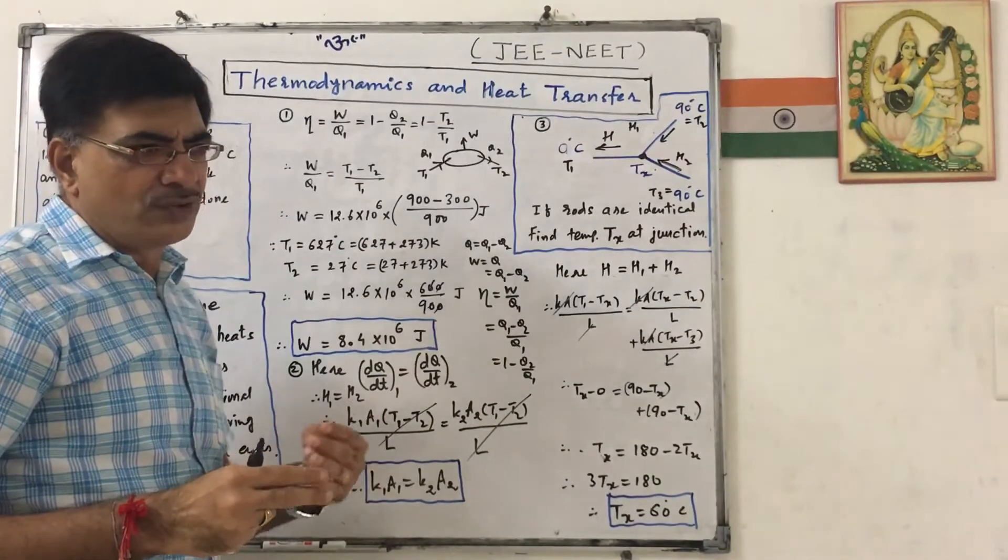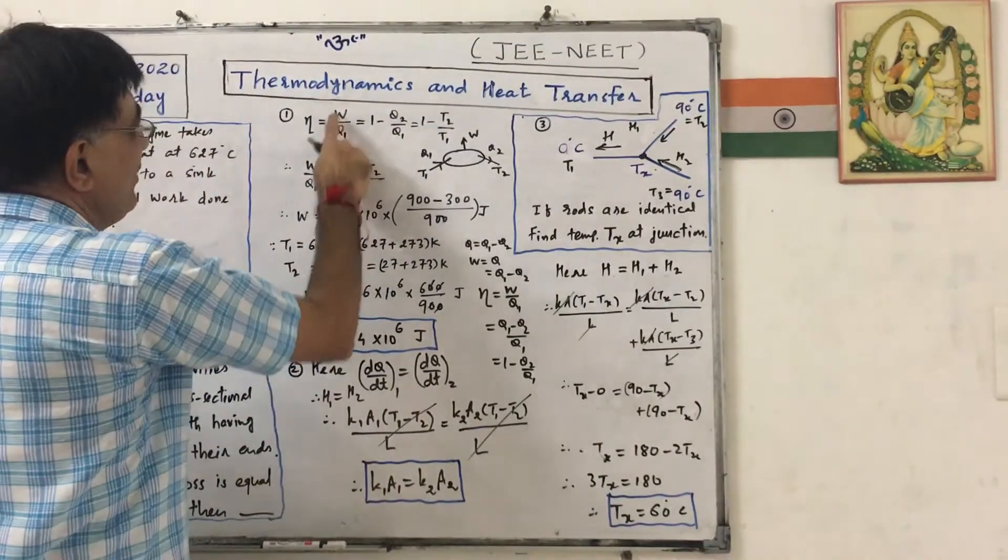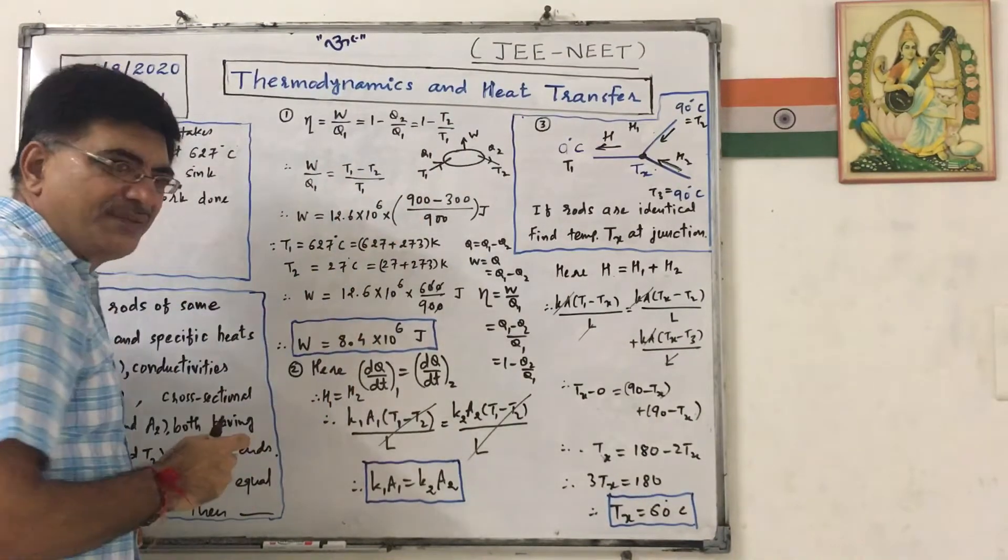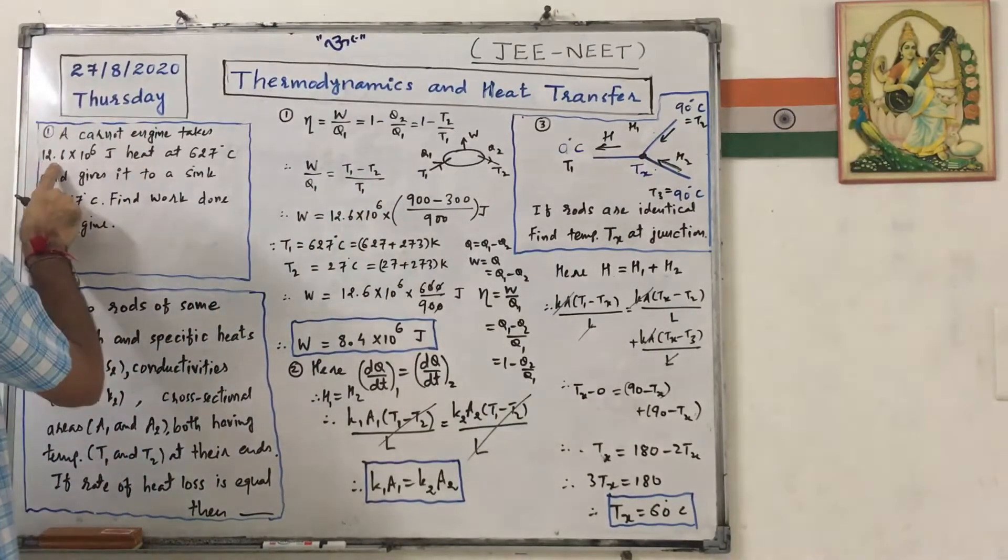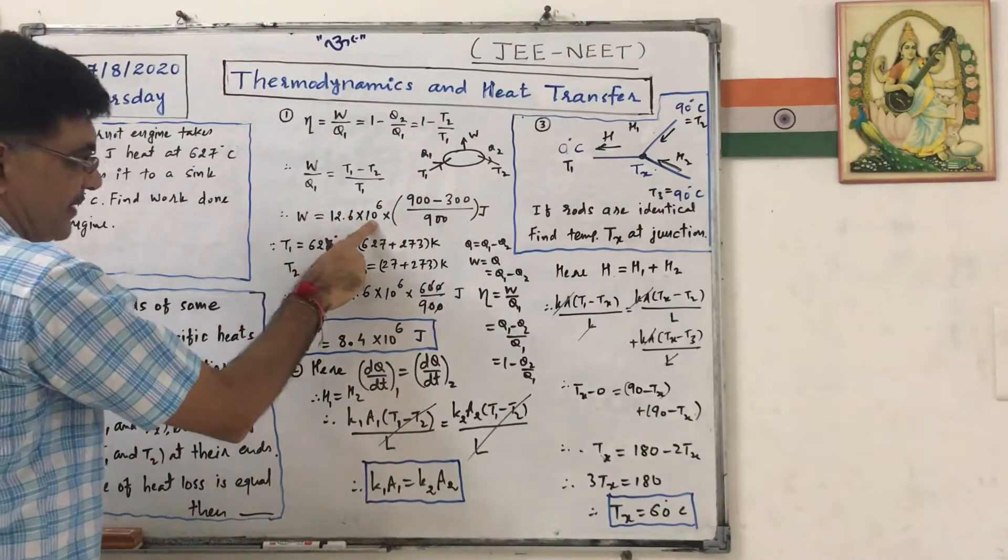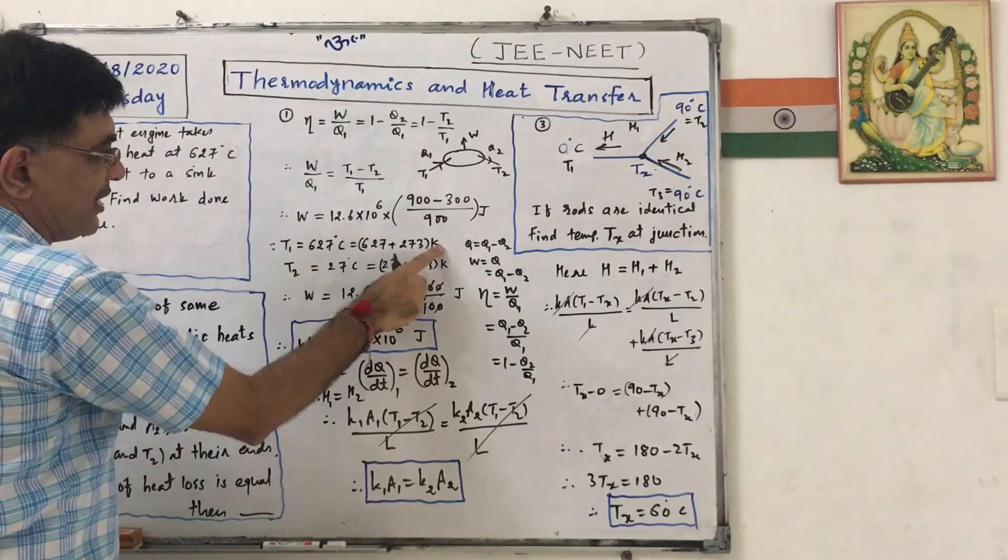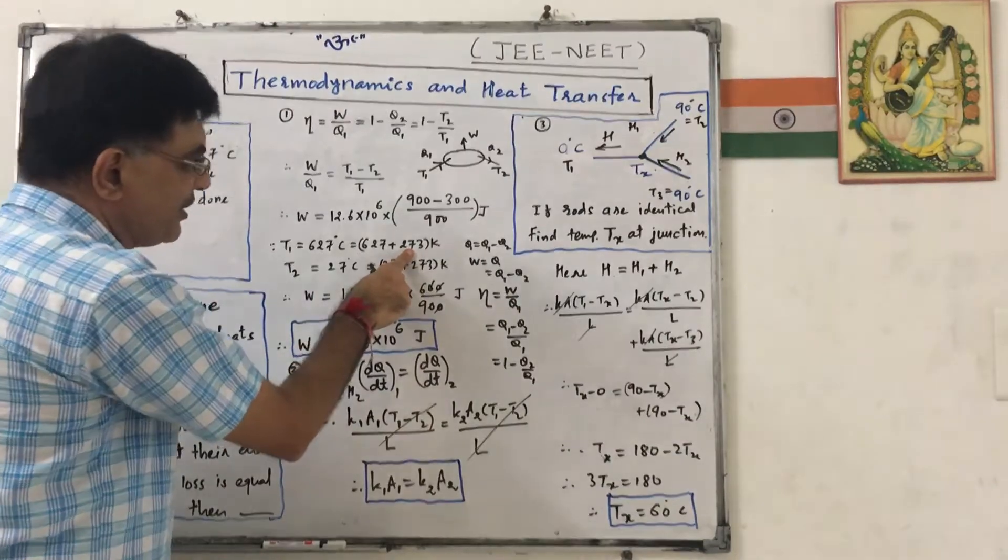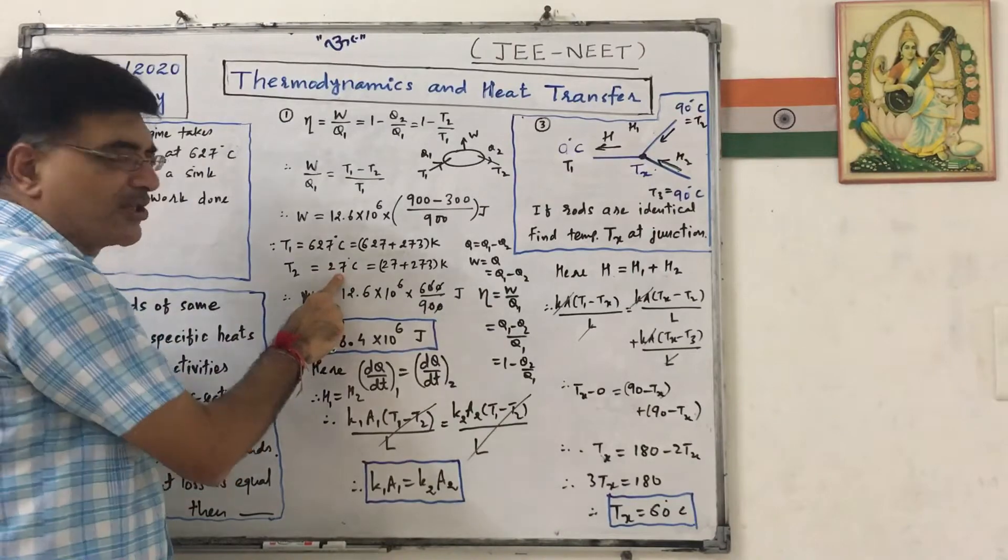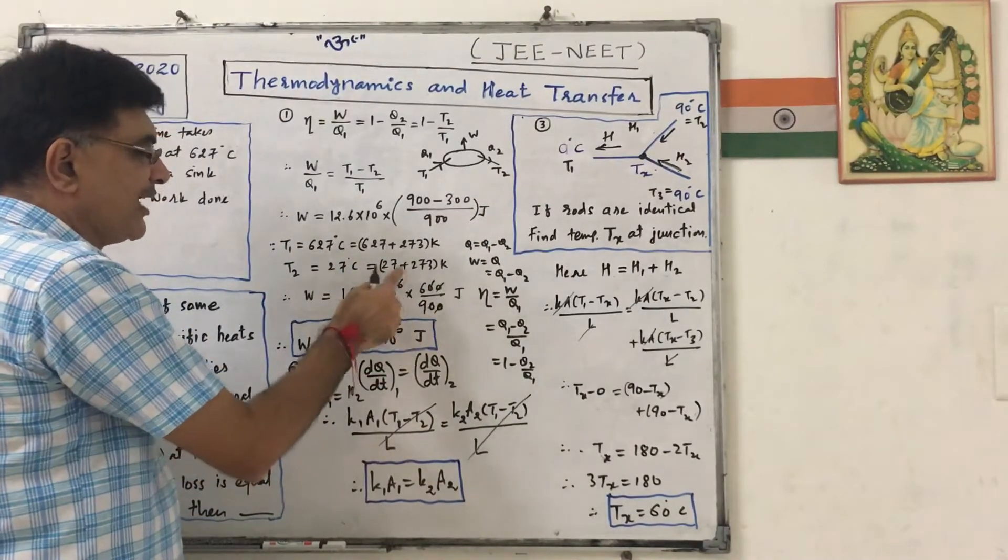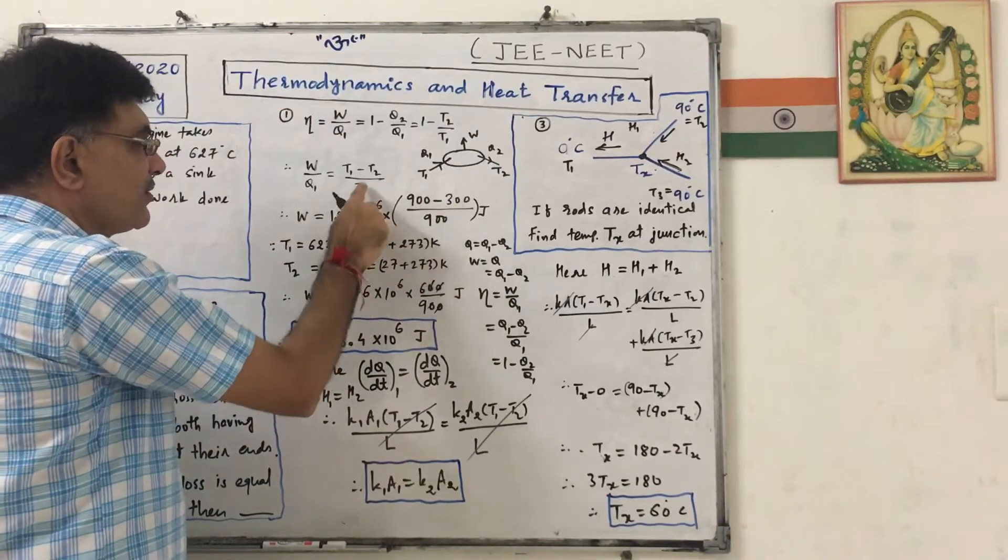We are concerned with - I have written all forms of efficiency, so if they ask you twisted question, you can solve it. So W by Q1 equals to T1 minus T2 upon T1, so W will be equal to Q1 into this. Q1 is heat absorbed, that is 12.6 into 10 raise to 6. T1, that is 620 degrees Celsius, we have to convert into Kelvin, so I have added 273, so it is 893 Kelvin. T2 is 27 degrees Celsius, temperature of sink. I have converted into Kelvin, so I have added 273, so it is 300 Kelvin.